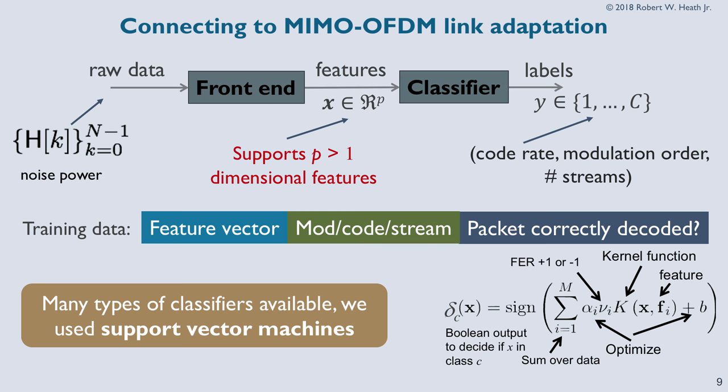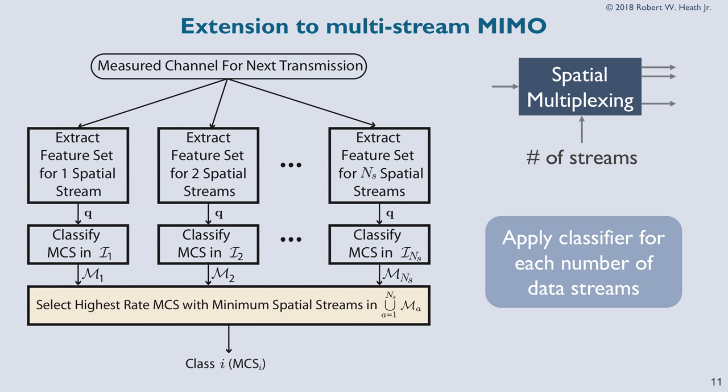To incorporate MIMO, we took the post-processing SINR, sorted it as described, and when we had multiple streams, we took the minimum of the SINRs and did the same thing — we didn't try to average or combine, just used the minimum. Then we applied the classifier to each of those different feature vectors to determine, for every number of streams, the coding and modulation to use. At the end, we find the one that meets the maximum rate while still satisfying the predicted error rate target.